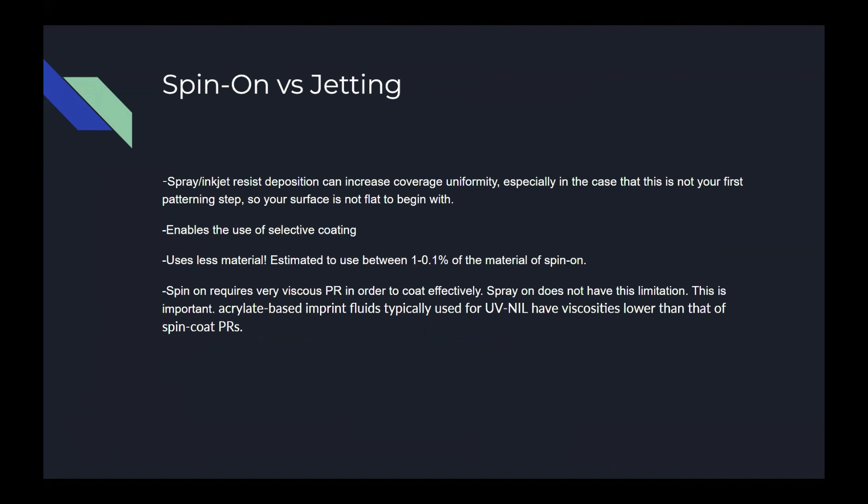Those familiar with typical semiconductor manufacturing would assume a UV-sensitive resist would be applied using a spin-on technique, but that is often not the case for nanoimprint lithography. The key reason is the lower viscosity of the resist used — nanoimprint techniques tend to require lower-viscosity resists that can't be spun on effectively. Additionally, photoresists are extremely pure and expensive materials, and spinning wastes the majority of what was applied, so spray-on has clear cost advantages. Inkjet application can also be manipulated to apply photoresist selectively, giving engineers another tool to tweak the process.